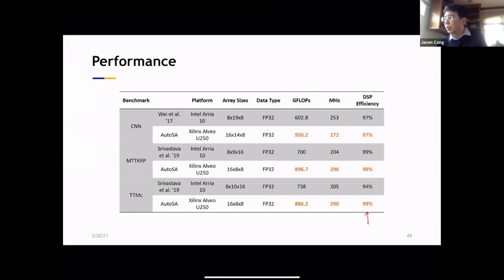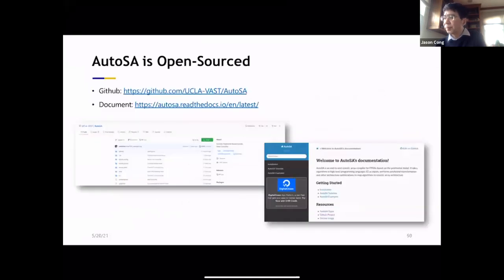So this is the comparison all the way. If you look at the TeraOps operations for 8 bit integer, we can get to close to seven TeraOps. So this is the best performing systolic array over all the publications on FPGA. And it's fully automated.